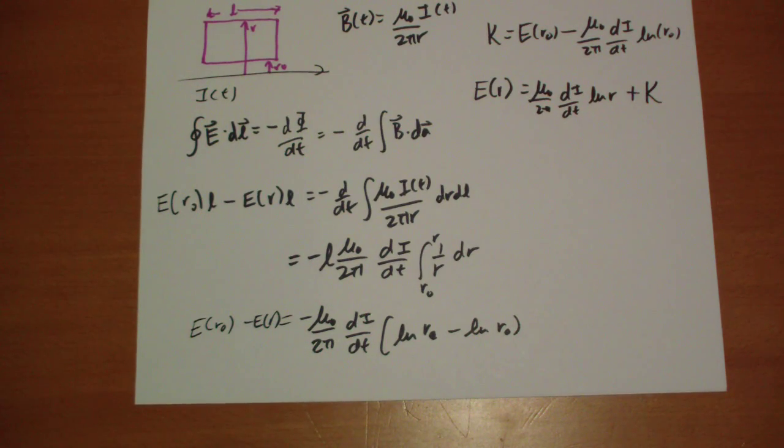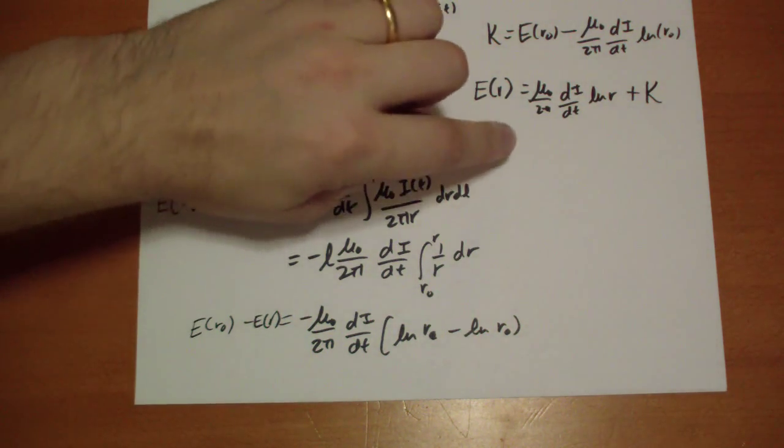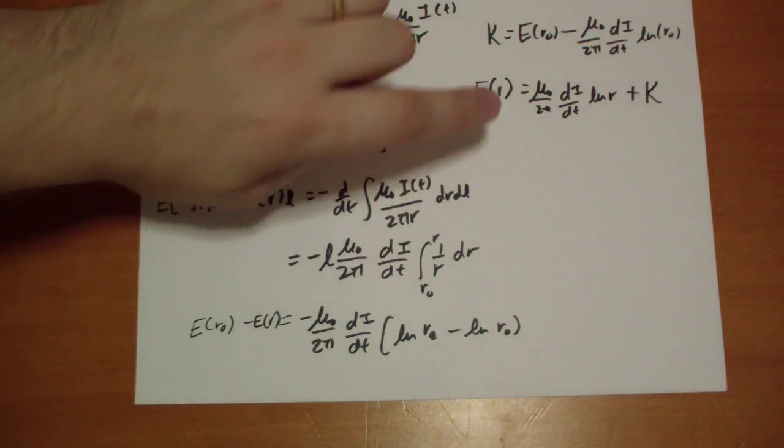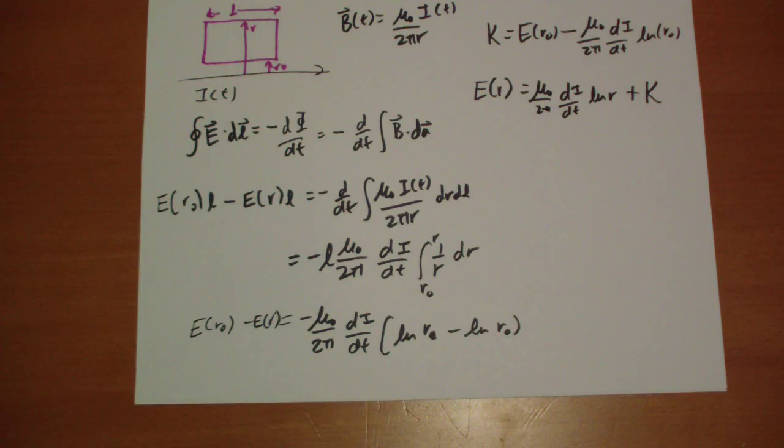Now K isn't going to vary—there's no r dependence in K—so depending on where you move on the r scale with E, K is not going to change. However, there could be a time dependence, and we're going to get into chapter 9 and talk about how that time dependence affects this problem.